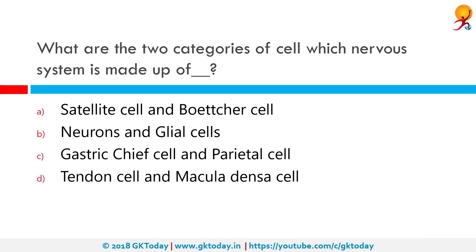What are the two categories of cells which the nervous system is made up of? There are two broad classes of cells in the nervous system: neurons, which possess the information, and glia, which provide the neurons with mechanical and metabolic support.